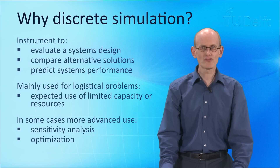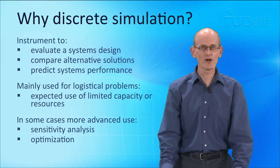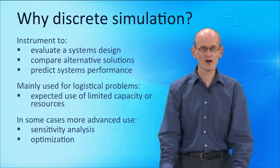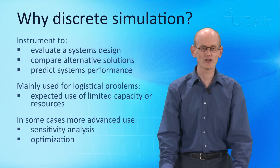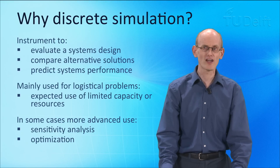Why do we use discrete event simulation? One is that it is an instrument to evaluate alternative system designs, to compare alternative solutions, to predict system performance. Often it is used for infrastructure problems and logistical problems, especially when we have limited capacity or resources, for instance in energy networks, transportation systems and logistic systems. Sometimes we also use it for more advanced simulations, such as sensitivity analysis or optimization.